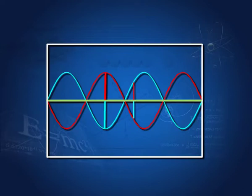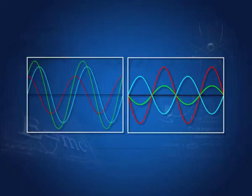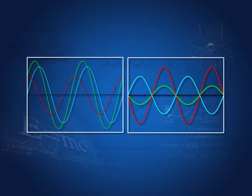It is not necessary that the interfering waves be of the same amplitude or same phase. Here are examples of waves of different amplitudes and different phases. Here the phase difference is π/4, here the phase difference is π/2, and here the phase difference is π. But they have different amplitudes. By adding displacements at each point, we get the resultant green wave.